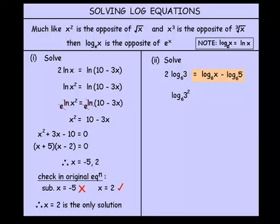now on the right side, if you have a log take away another log, we can write it as a single log. It'll be equal to the log base 6 of x over 5. So remember, if you have 2 logs subtracting, we can write it as a single log with a division. Now at this stage, notice both sides have log to the base 6. Well, log to the base 6 of 3 squared equals log to the base 6 of x over 5, so hopefully you can realize that the 3 squared must match up with the x over 5. They must be the same.